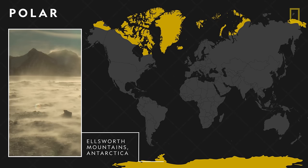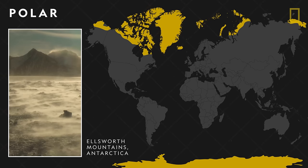Polar deserts are found in the Arctic and Antarctic — the other end of the extreme. Winter temperatures in the Antarctic desert average around minus 50 degrees Fahrenheit.